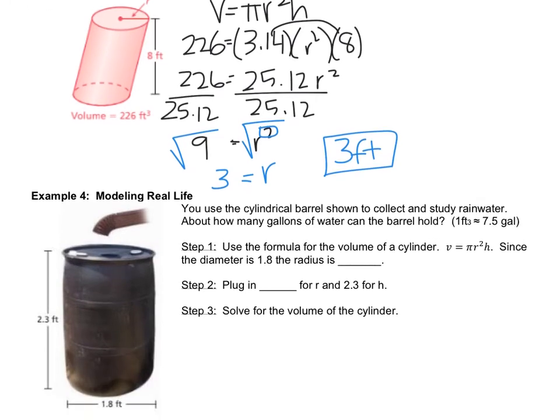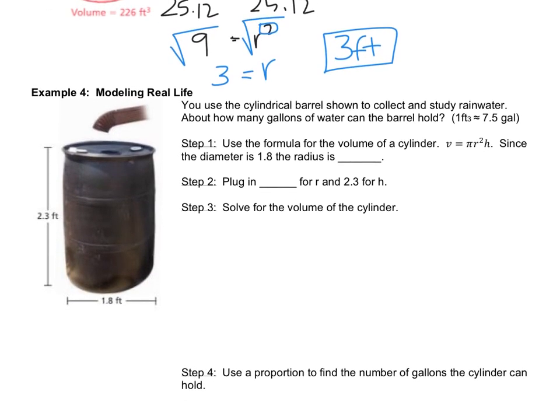All right, last one, number four. You use the cylindrical barrel shown to collect and study rainwater. About how many gallons of water can the barrel hold? And it tells you one foot cubed, or one cubic foot, meaning that it would be a 1 by 1 by 1 cube. If you had a 1 by 1 by 1 cube full of water, it would represent 7.5 gallons of water. So one cubic foot would equal 7.5 gallons basically.